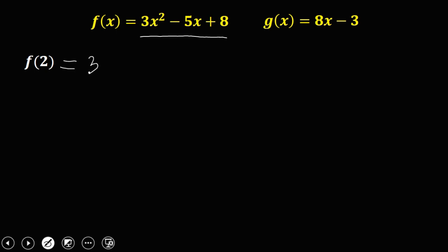From f function that's 3x but x is 2, that's 2, then squared, then minus 5 and x is 2, then plus 8. Then you simplify, so 3 then 2 squared is 4, and this one negative 5 times 2, that's negative 10.